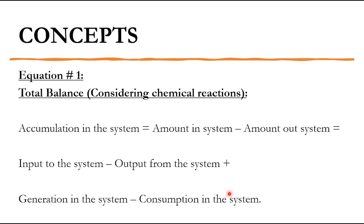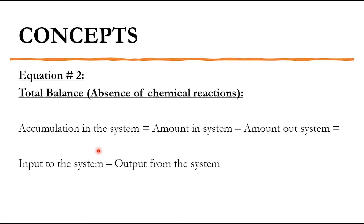That is the overall representation — the new concept we are learning in lecture 5. Earlier, the concept was simply that mass in equals mass out. But today it has been extended to chemical reactions. For non-chemical reactions, the concept of accumulation is applied, and the equation becomes: input minus output plus generation minus consumption. Without chemical reaction, this simplifies to: accumulation = amount in minus amount out, which equals input minus output from the system.